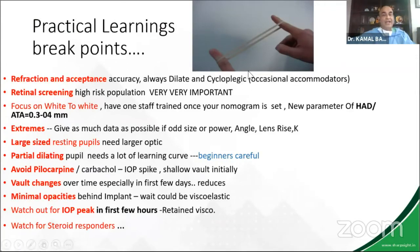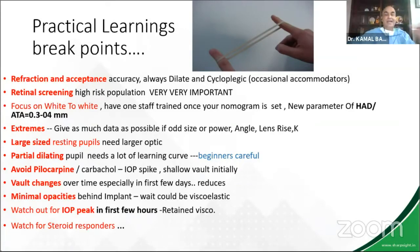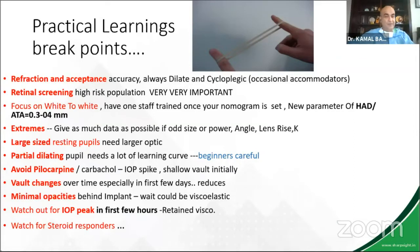Practical breaking points: if you haven't done a good cycloplegic refraction — in my initial cases I had patients wearing minus 9 spectacles, the autorefractor gave me minus 8.75, I corrected them for minus 9 and realized they were probably accommodating because they were wearing wrong power glasses. Similarly, large resting pupils need to be noted in the file and measured because you need a larger optic size — IPCL comes to the rescue here as you can order large size IPCL; I've done up to 8.5 mm IPCL. I personally avoid pilocarpine as it makes the vault shallow initially, then it returns to normal within three to four days.